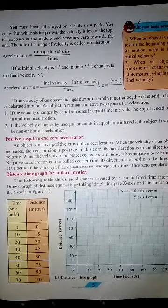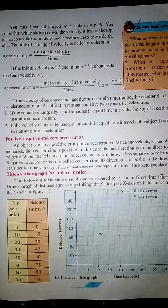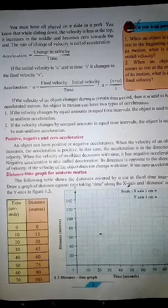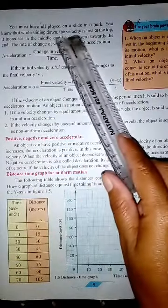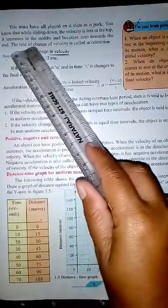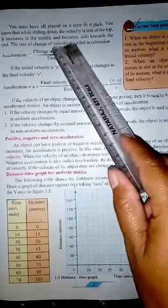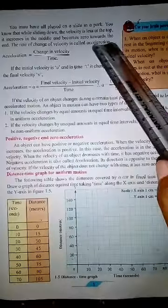That activity is related to the change in velocity. You must have all played on a slide in a park. While sliding down, the velocity is less at the top, then it increases in the middle, and becomes zero towards the end. The rate of change of velocity is called acceleration.